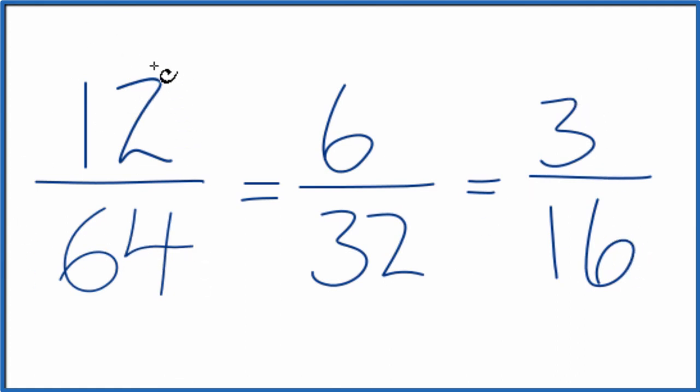You could list all the factors for 12 and 64, find the greatest common factor. You could skip this step here, but this way works just as well.